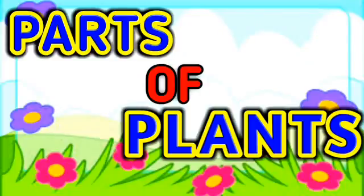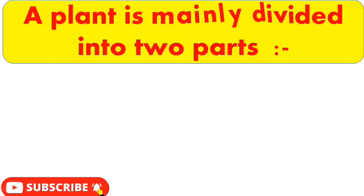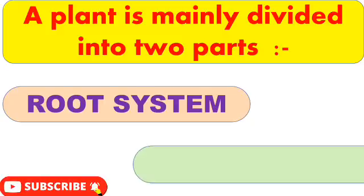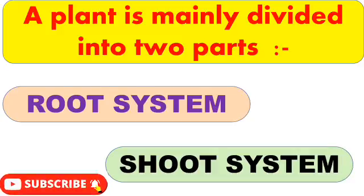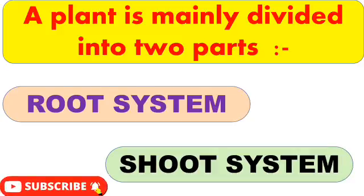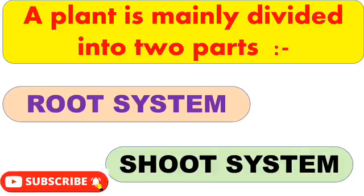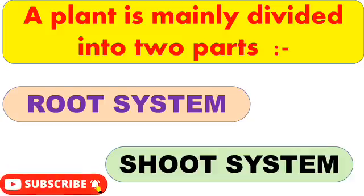Hello everyone and welcome back to Aditya Kids Education. Today we are continuing with our previous topic, that is parts of plants. We have already learned that a plant is mainly divided into two parts: root system and shoot system. The root system includes roots, which grow downwards inside the soil to absorb water and minerals. Today we will learn about the shoot system.